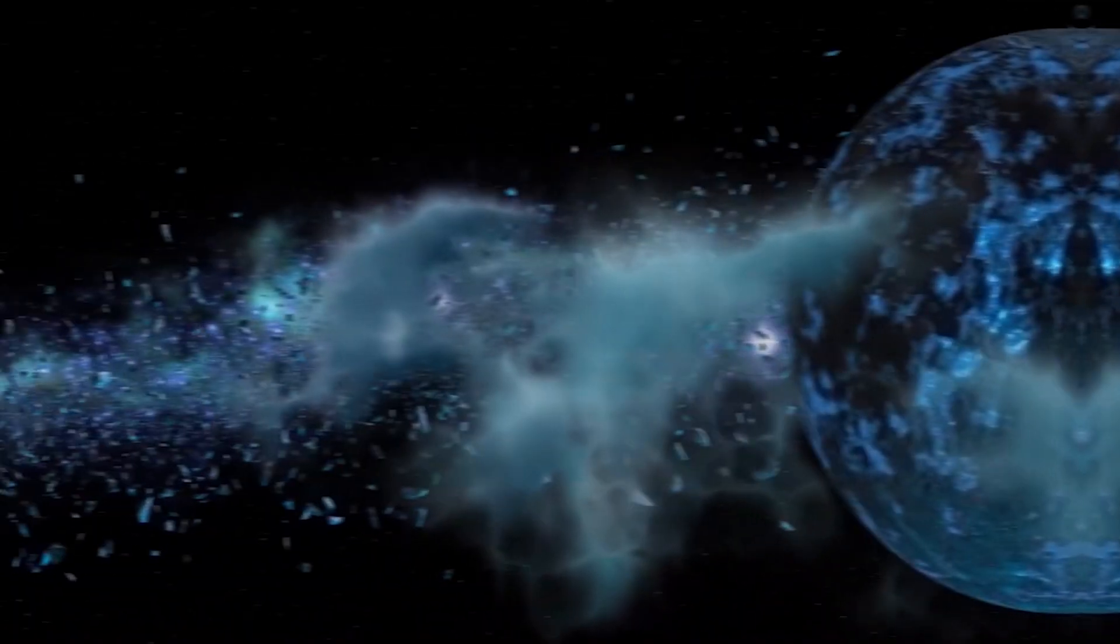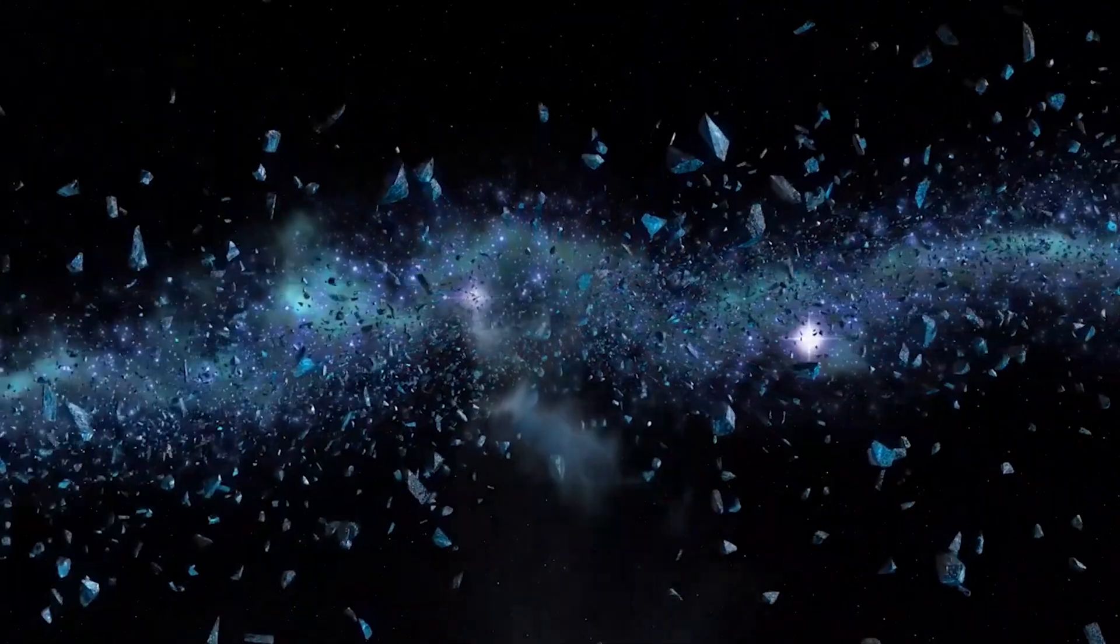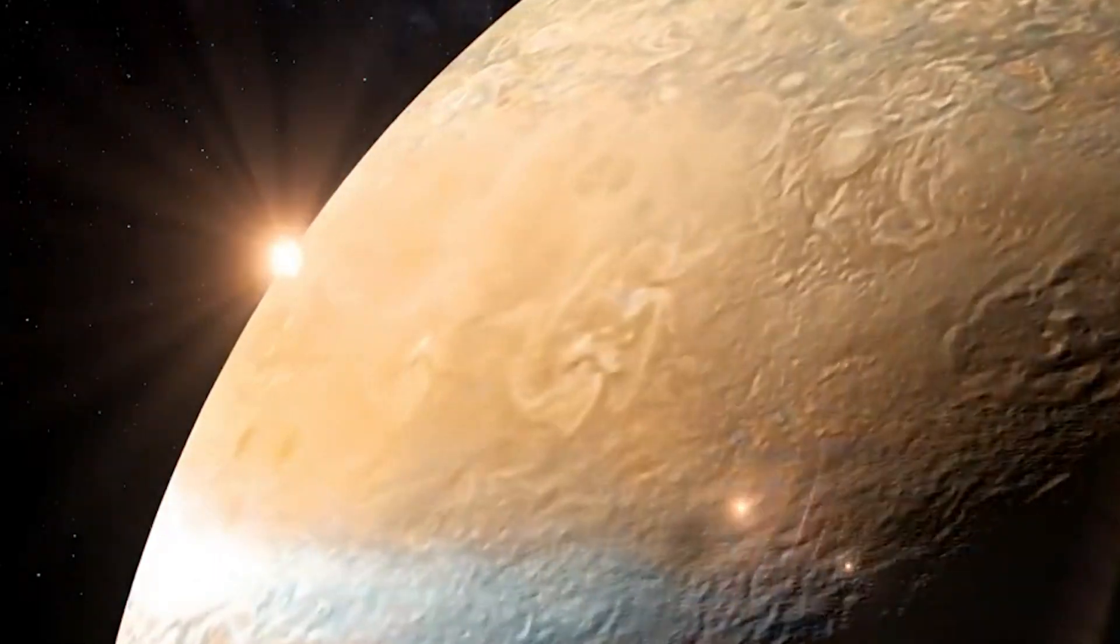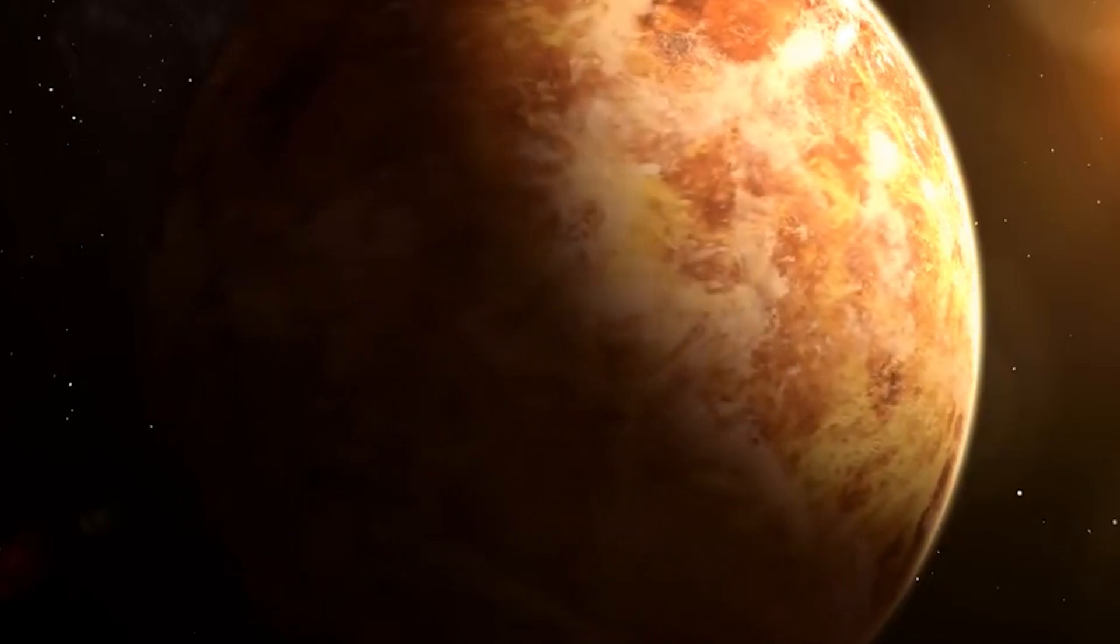The WASP-96b can be found in the Phoenix constellation, 1,150 light-years away from our Earth. Due to its extreme temperatures of around 1,000 degrees Fahrenheit, the planet is nicknamed Hot Jupiter.